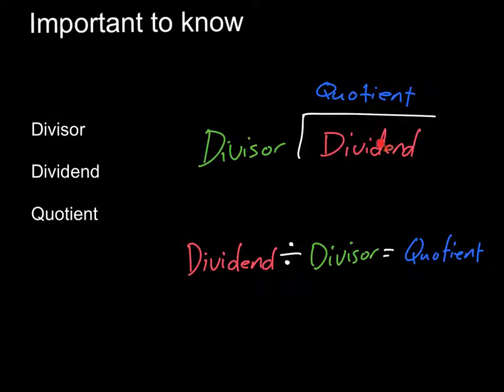When we look at these, we have our dividend, which is what is being divided. We have our divisor, which is what the dividend is being divided by. And we have our quotient, which is our answer to a division problem. And these are the two most common ways to set up the problem.